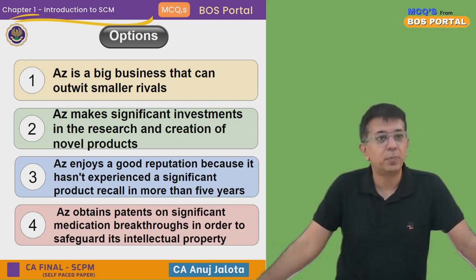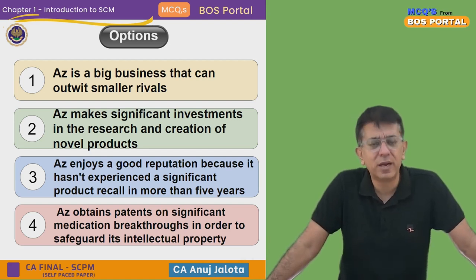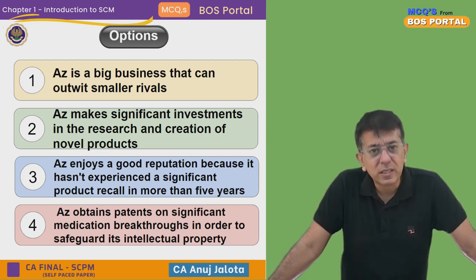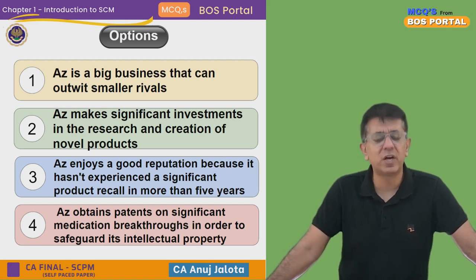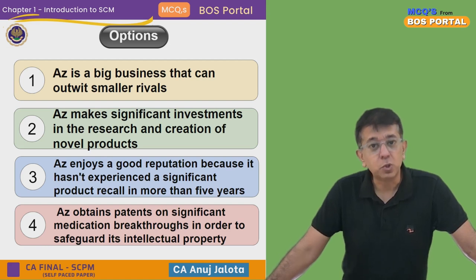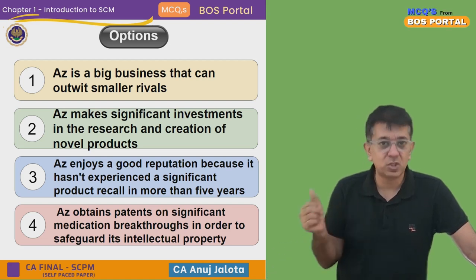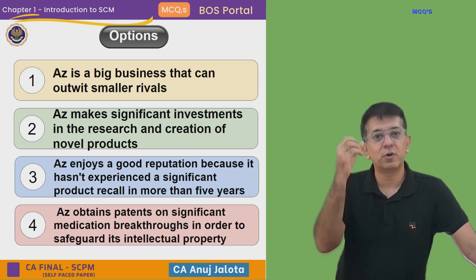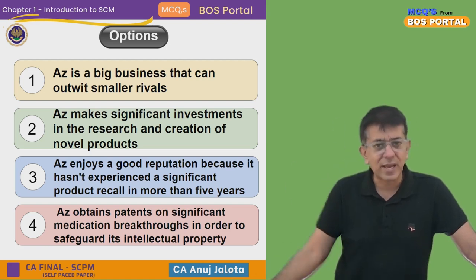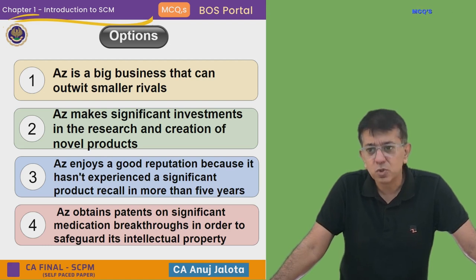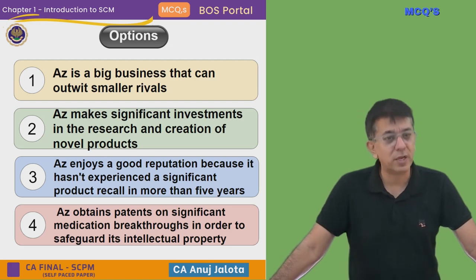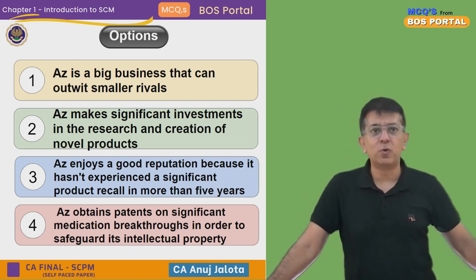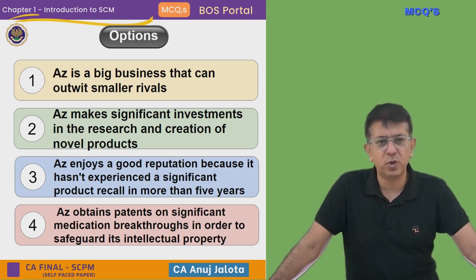Fourth, AZ obtains patents on significant medication breakthroughs in order to safeguard its intellectual property. This is obviously a huge competitive advantage — it means other companies cannot replicate the formula you have invented. In medical businesses this is a massive advantage, because you spend a lot of money on R&D, come out with a formula — say for treatment of cancer — and other companies cannot copy it. So acquiring patents is a huge breakthrough.